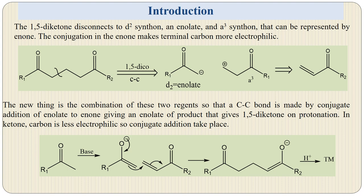Here is a 1,5-diketone. When we disconnect here, this is the D2 synthone and here is the A3 acceptor synthone. From carbon 1, carbon 2, carbon 3 — this will behave as acceptor synthone, and carbon 1 and carbon 2 form the donor synthone. Even-number carbons are donor synthones while odd-number carbons are naturally acceptor synthones.